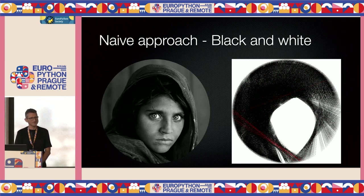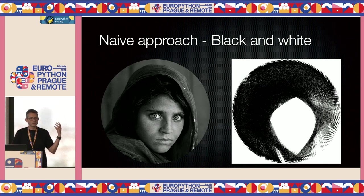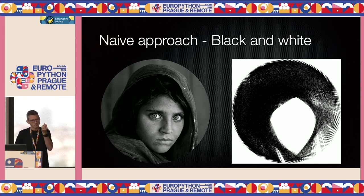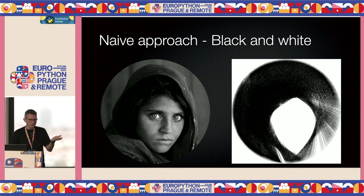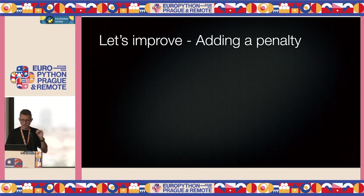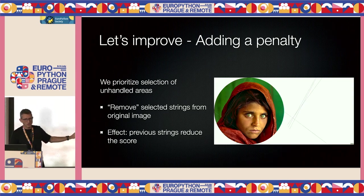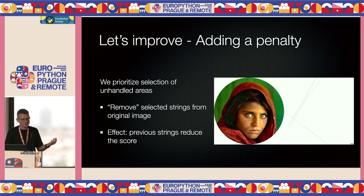The naive approach doesn't work so well. We're prioritizing black, giving it too much weight, and only catching the dark areas. So we need to do something smarter — add some sort of penalty. An area we've already covered should score lower. What we're going to do is: the strings we've selected are scratched out of the original image, which reduces the score for areas we've already covered.